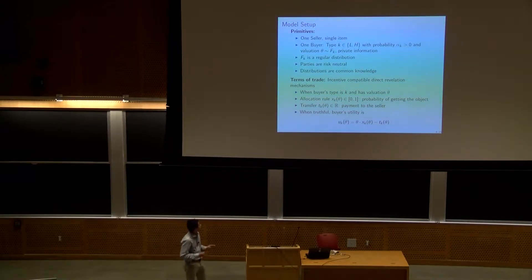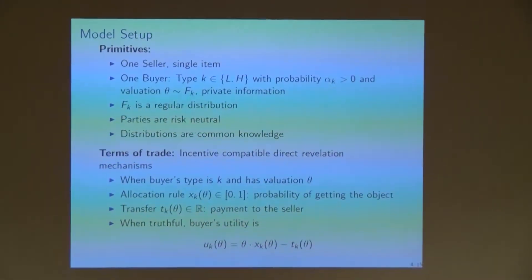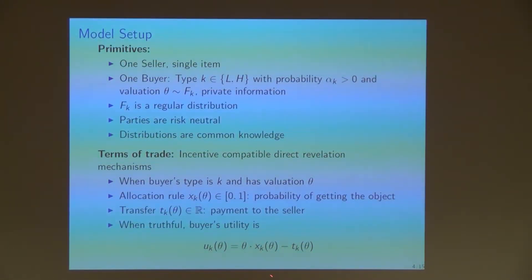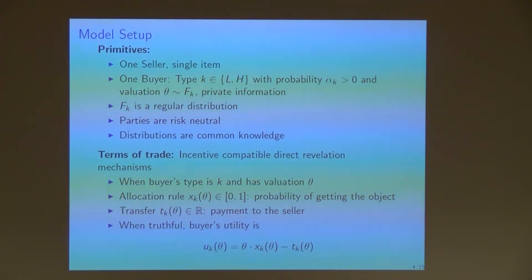Let me give you the model. We have one seller selling a single item to one buyer. This buyer has a type denoted by k, which can be either low or high. The buyer is of type low with probability α_l and of type high with probability α_h. The buyer also has a valuation for the item θ distributed according to some distribution f_k depending on the type. Both the type and the valuation are private information for the buyer. We assume that the distribution f_k is regular, the parties are risk neutral, and all primitives are common knowledge.